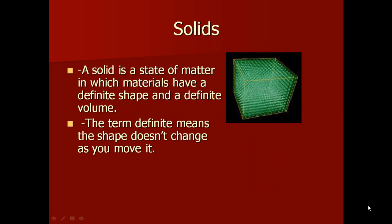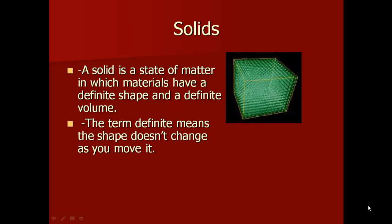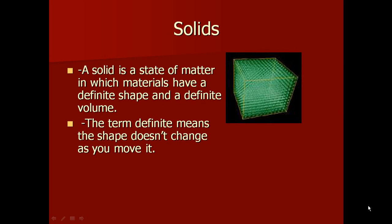A solid is a state of matter that has a definite shape and a definite volume. That means that it doesn't change. Its shape and its volume stays the same. No matter what environment it's in, it's always going to stay the same. The term definite means the shape doesn't change as you move it. An example is a remote control. If I have the remote control in my living room or if I take it in the kitchen, it doesn't matter. As long as the temperature and pressure stays the same, it's going to still be a solid. It's going to have the same shape and the same volume.